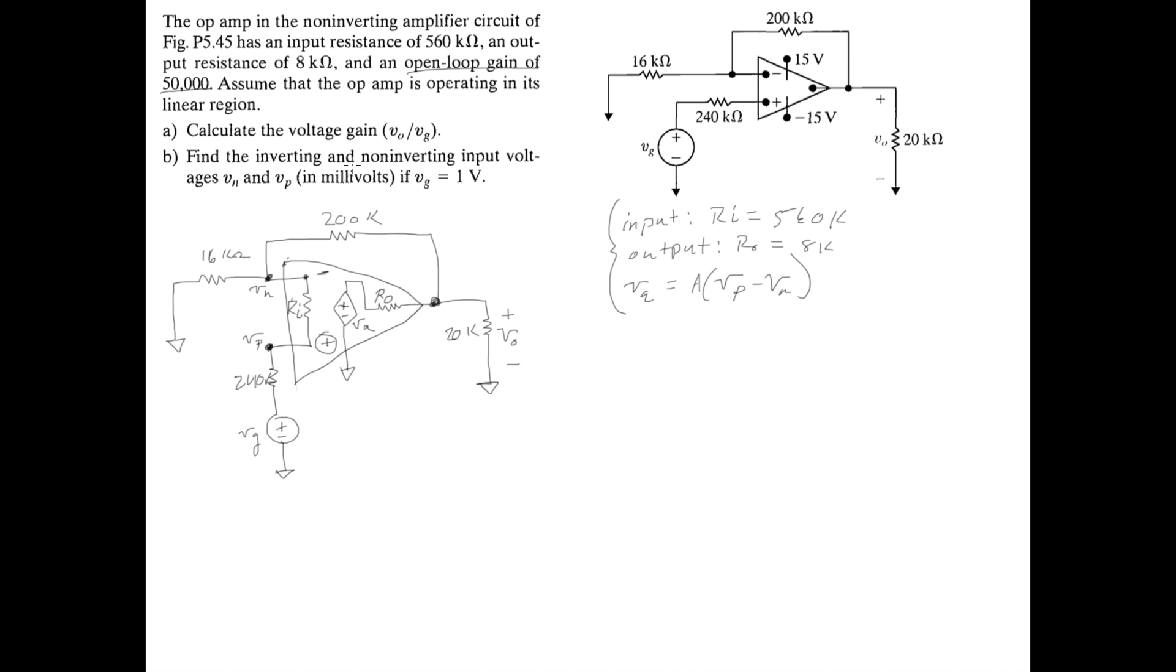First, we have to calculate the voltage gain, Vo over Vg. So to get Vo, we're just going to use really basic nodal analysis. So we'll call this node node 1, and we'll call this node down here node 2.